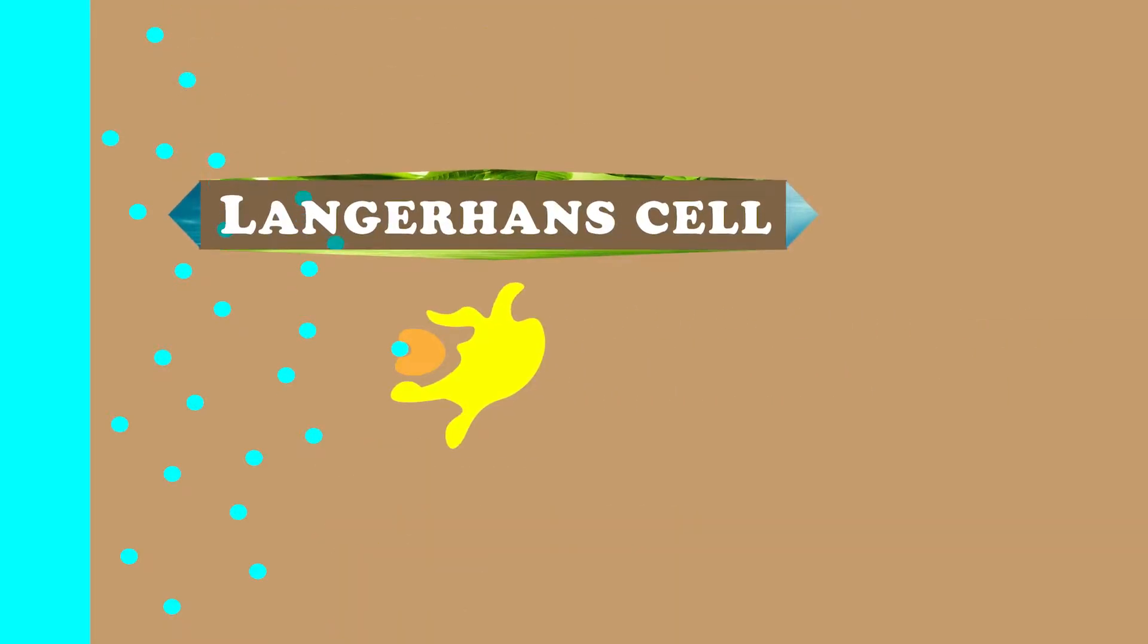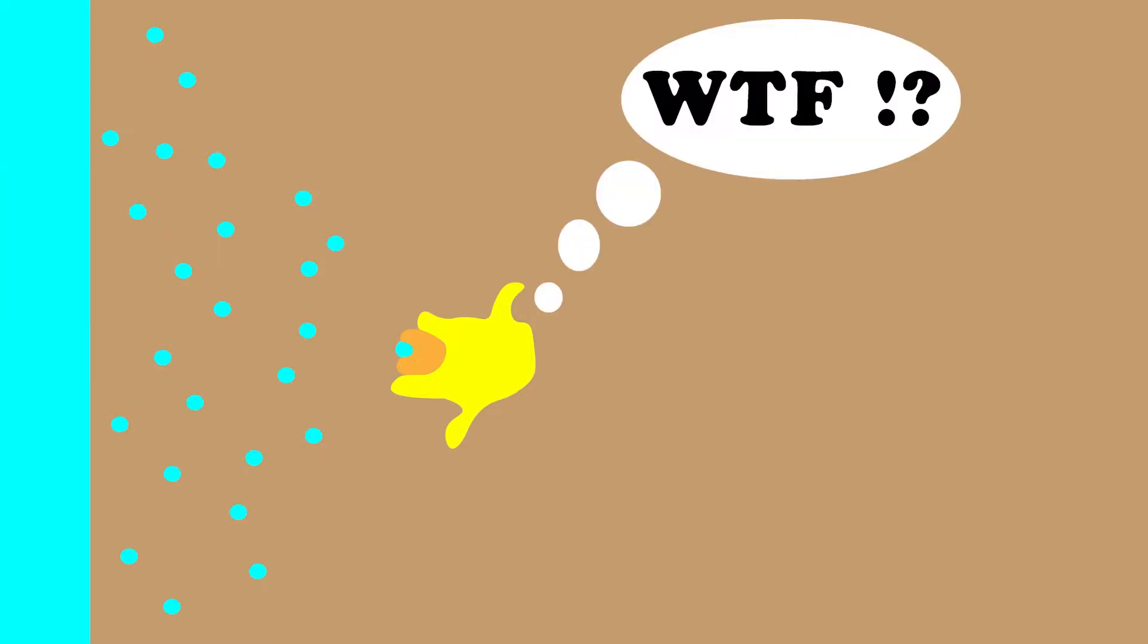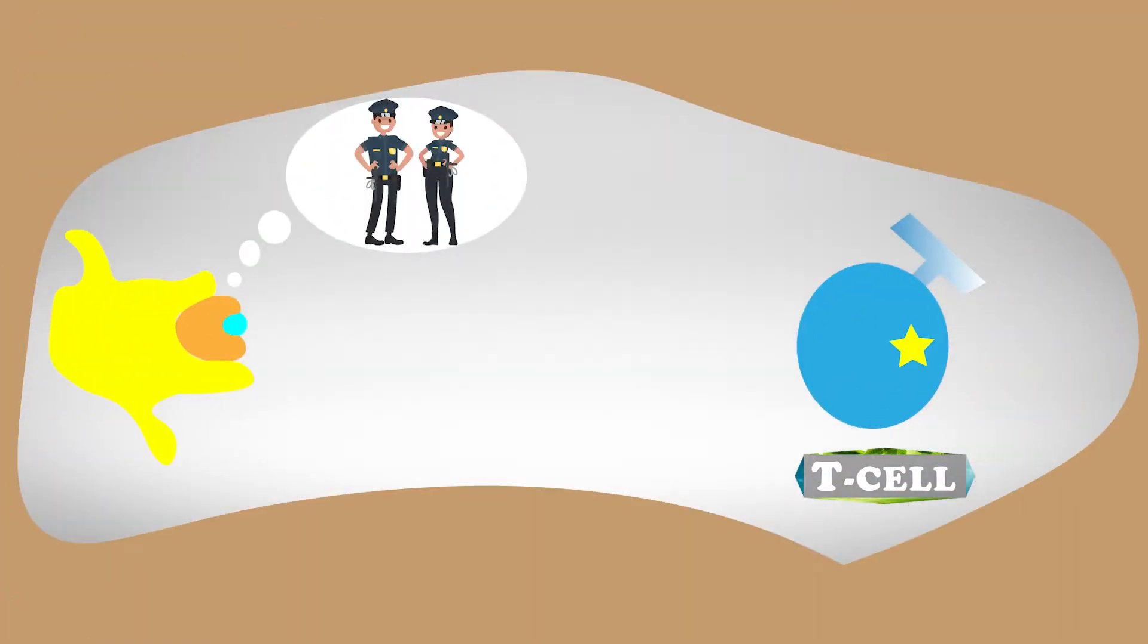And then a dendritic cell, called a Langerhans cell, will grab onto the protein with the urushiol. This cell will be like WTF and will eventually get an antigen signal to the lymph nodes to recruit some helper T cells. This is like the cell dialing 911.